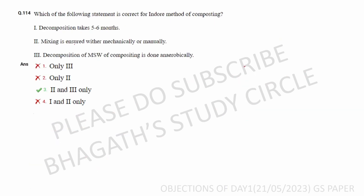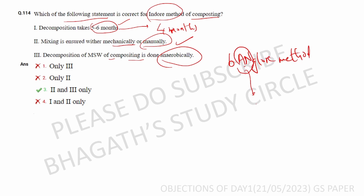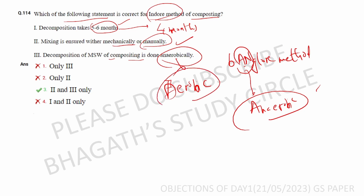Next question: which of the following statements is correct for the indoor method of composting? Decomposition takes place for four to six months. Mixing is ensured mechanically or manually — that is correct. Decomposition of municipal solid waste in composting is done anaerobically — that refers to the Bangalore method, which is anaerobic. The indoor method is aerobic, so that statement is wrong. Therefore only statement two is correct — option two is the correct answer.